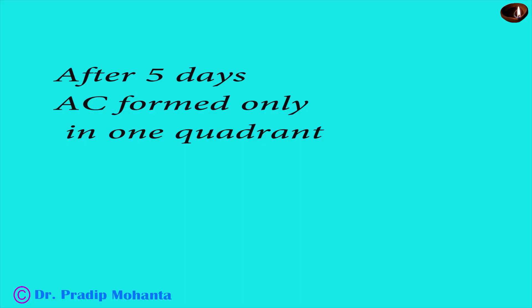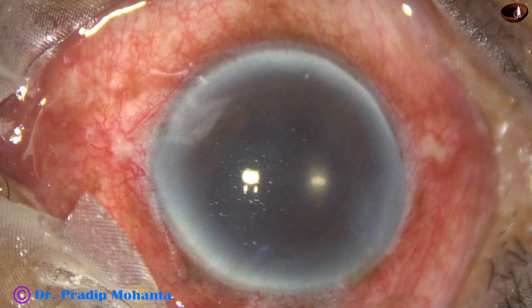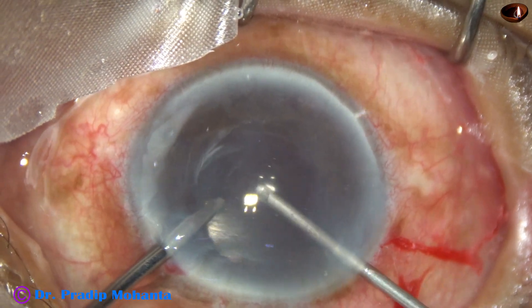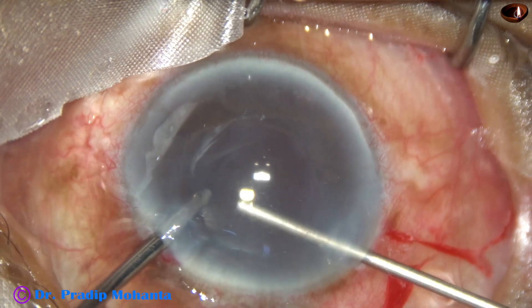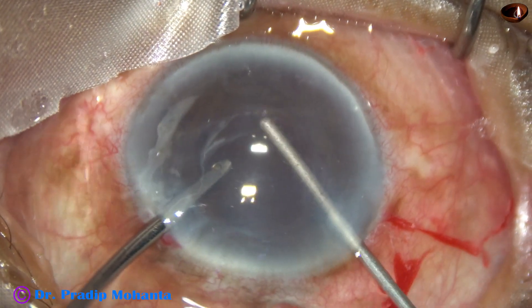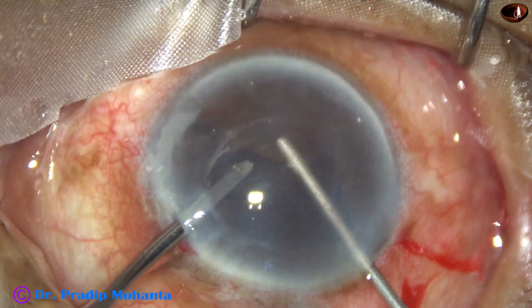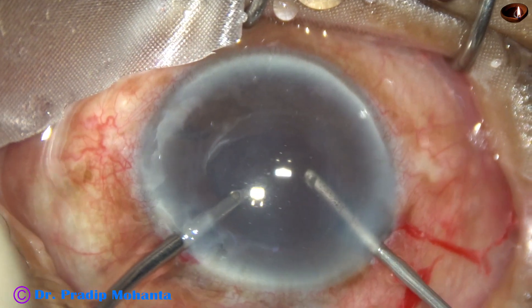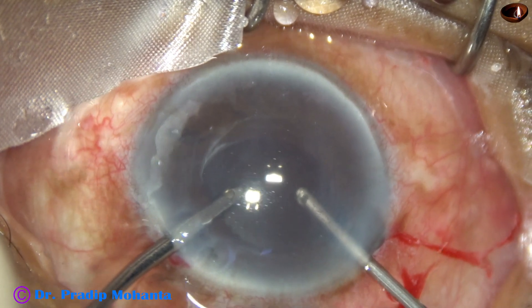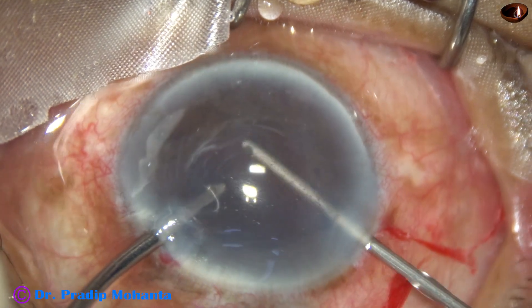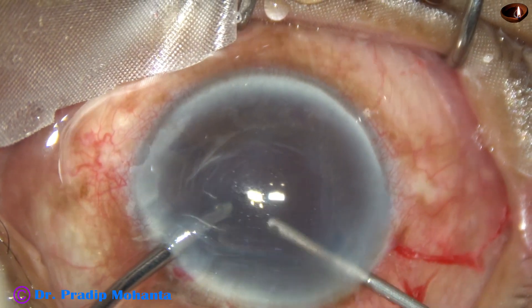After five days, the anterior chamber had formed only at one quadrant — from 6 o'clock to 9 o'clock. So I went through the anterior chamber and used IA mode — irrigation and aspiration mode — and formed the anterior chamber nicely. The anterior chamber became deep all around.